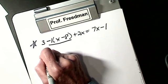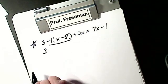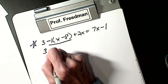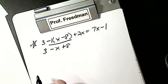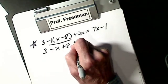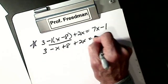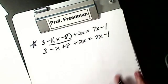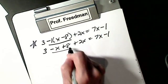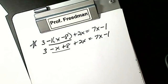So my 3 stays. I get minus X plus 8 plus 2X equals 7X minus 1. All I really did was distribute the property. Second step: combine like terms.